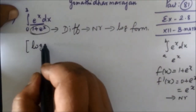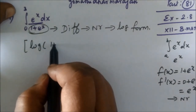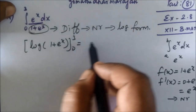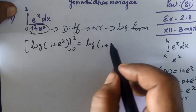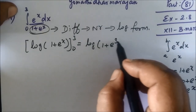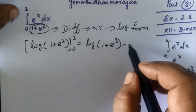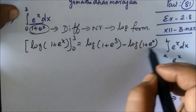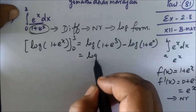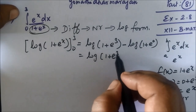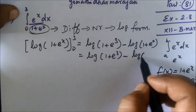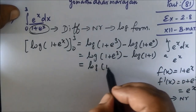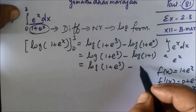So this is equal to log of (1 plus e^x), with limit 0 to 3. Applying the limits: upper limit gives log of (1 plus e^3), minus lower limit. Since e^0 equals 1, the lower limit gives log(1 plus 1), which is log(2). So we have log(1 plus e^3) minus log(2).